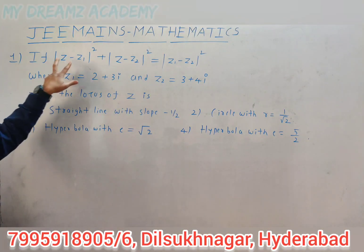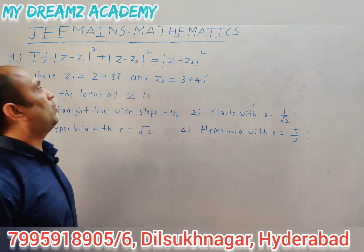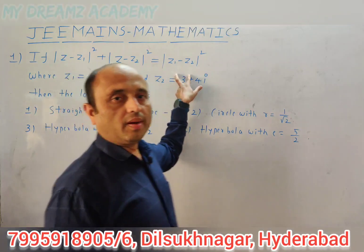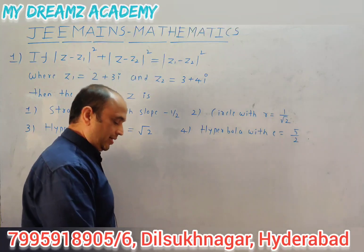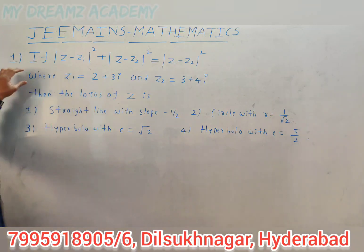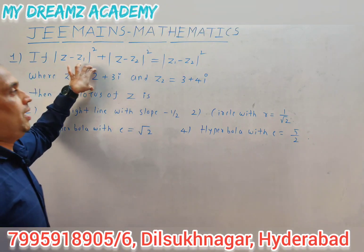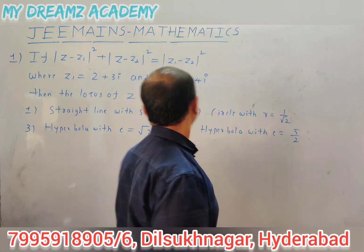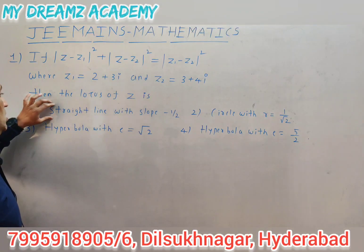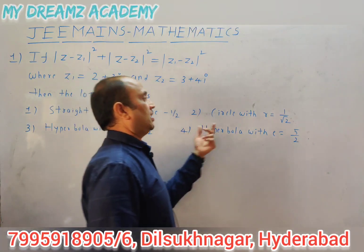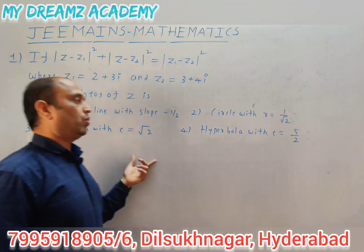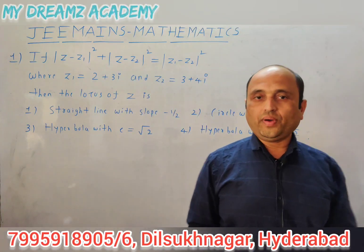If |z - z1|² + |z - z2|² = |z1 - z2|², one condition is given in terms of z1, z2, and z. Here z1 = 2 + 3i and z2 = 3 + 4i. Find the locus of z. Options: straight line with slope -1/2, circle with radius 1/2, hyperbola with eccentricity √2, or hyperbola with eccentricity 5/2.